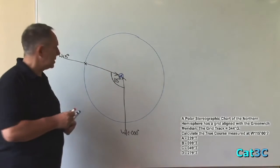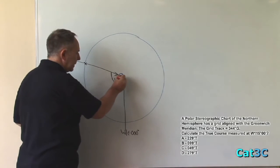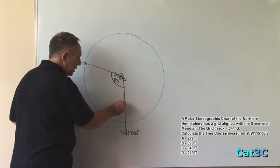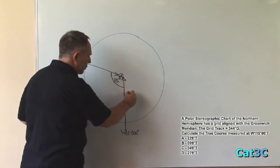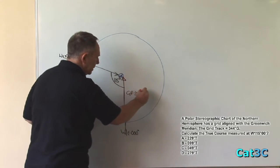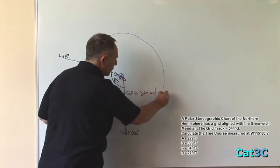The grid is aligned with the Greenwich Meridian. Therefore, the Greenwich Meridian becomes the grid datum or reference meridian.